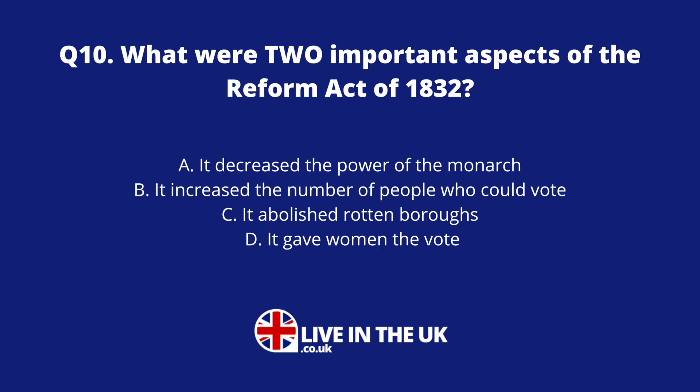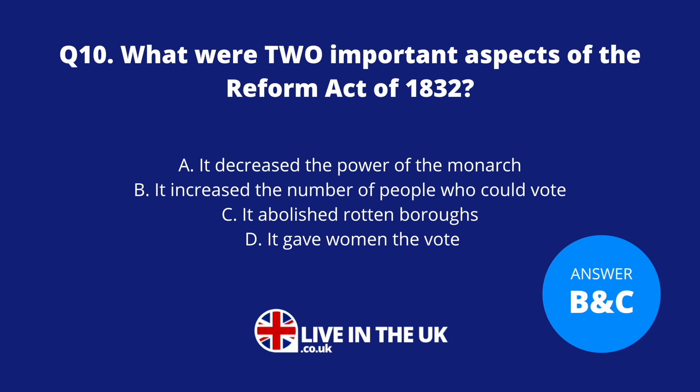Question ten: What were two important aspects of the Reform Act of 1832? A. It decreased the power of the monarch. B. It increased the number of people who could vote. C. It abolished rotten boroughs. D. It gave women the vote. The answers are B and C. It increased the number of people who could vote, and it abolished rotten boroughs — constituencies that either didn't exist or had very few constituents.